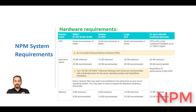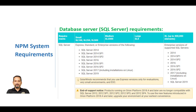The operating system supports these languages: English, German, Japanese, and Simplified Chinese. These are the hardware requirements for installing NPM based on the license. For the database server, which is SQL Server, for small, medium-sized, and large networks we can use Express, Standard, and Enterprise versions. For a small network or for testing and evaluation, like our course, we can install SQL Express Edition.